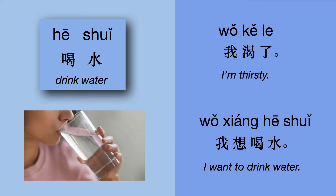喝水 — 喝 means drink, so 喝水 is 'drink water.' For example, 我渴了 means 'I'm thirsty.' 我想喝水 means 'I want to drink water.'